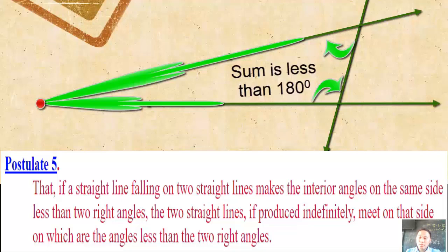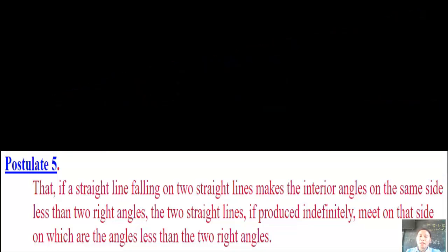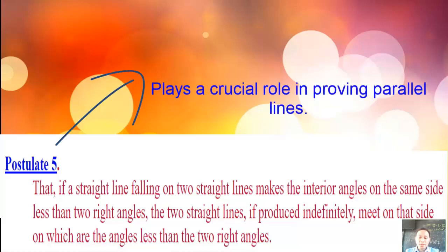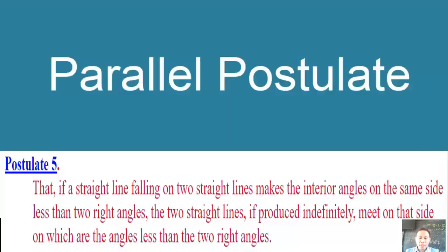Postulate 5 is not as easy that can be understood intuitively. It doesn't explicitly say that parallel lines exist. However, it plays a crucial role in the proofs of the many properties of parallel lines. That's why it's called the parallel postulate.